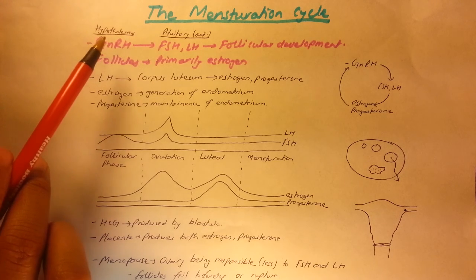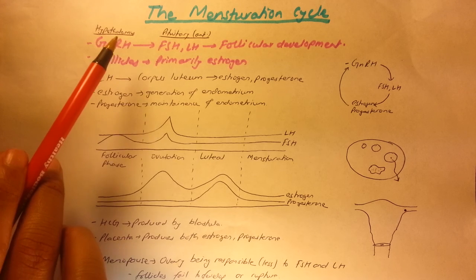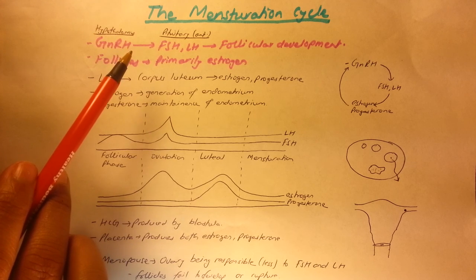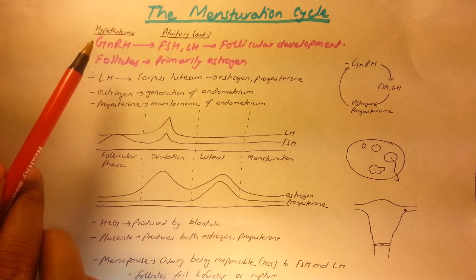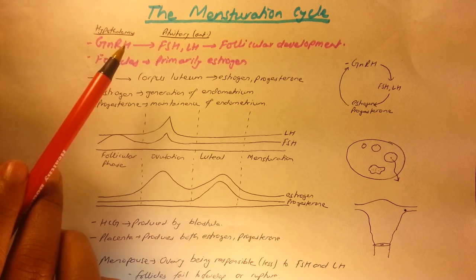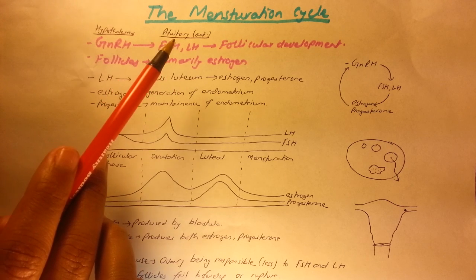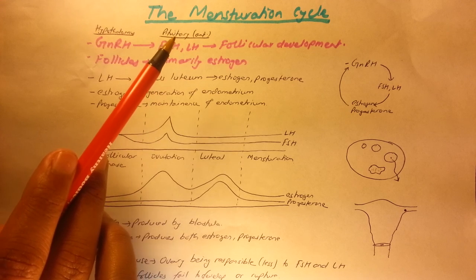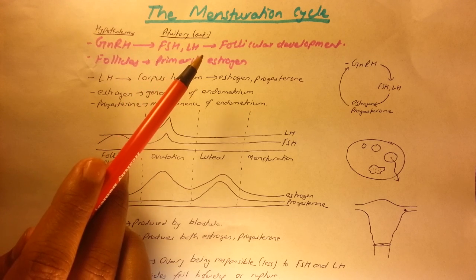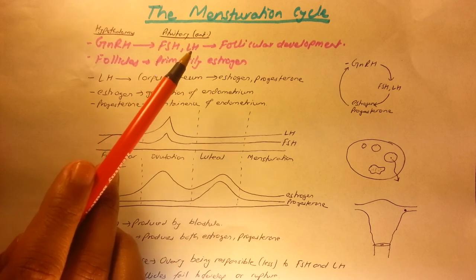Our hypothalamus is a group of cells located in our brain. The hypothalamus secretes a hormone called gonadotropin-releasing hormone, abbreviated as GnRH. This hormone, in turn, stimulates the anterior pituitary gland — also situated in our brain — to produce follicle-stimulating hormone and luteinizing hormone.